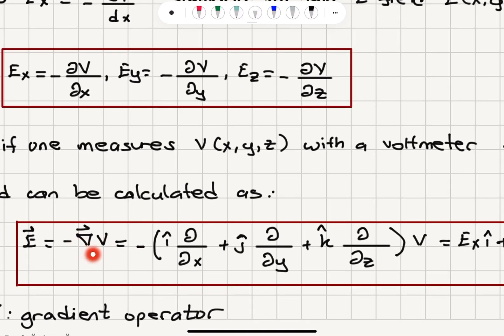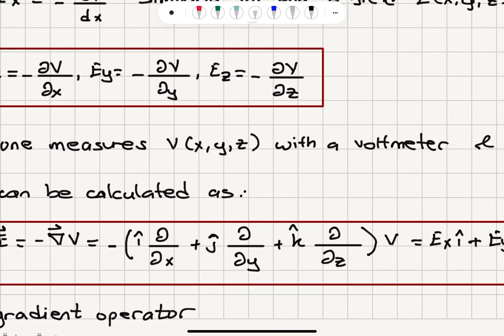Electric field is minus gradient of the potential. So we can write this as minus i-hat or x-hat del del x plus j-hat del del y plus k-hat del del z in parentheses applied to the potential. So this is our gradient operator.